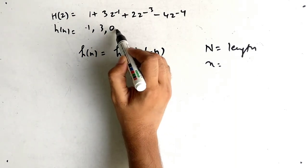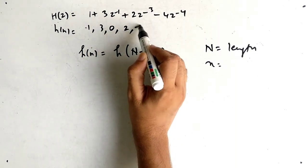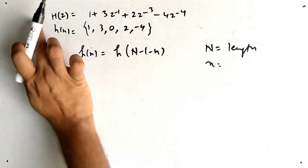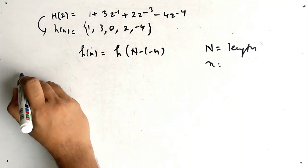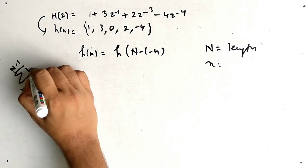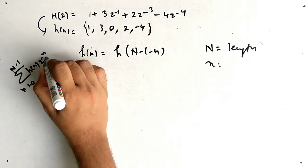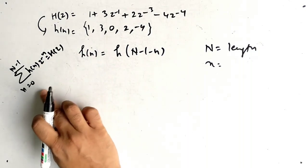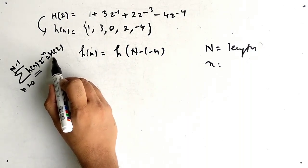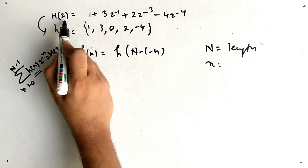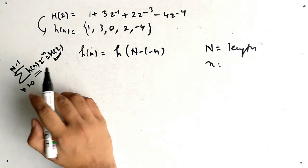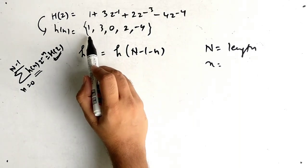Let's take an example. h(n) = {1, 3, 0, 2, −4}. The zero appears because using the formula — summation from n=0 to N−1 of h(n)z⁻ⁿ = H(z) — we take the inverse logic: given H(z), we find h(n), giving us the sequence 1, 3, 0, 2, −4.